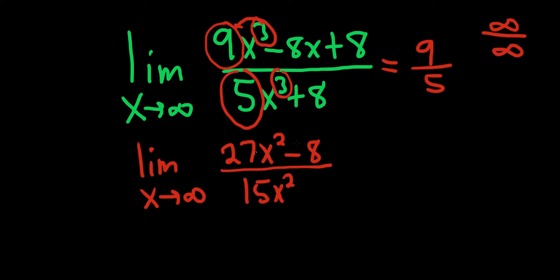You still have infinity over infinity. So this is equal to, taking the limit again, x goes to infinity. So 2 times 27 is going to be 54x. On the bottom, we'll just get 30x. It's still infinity over infinity. So you could do it again, use L'Hopital's again.